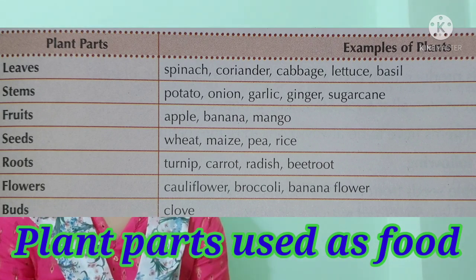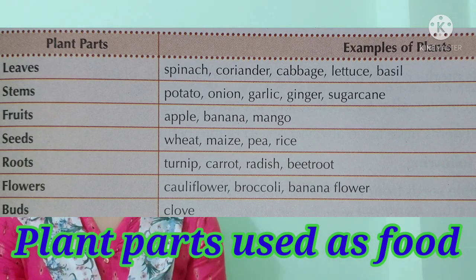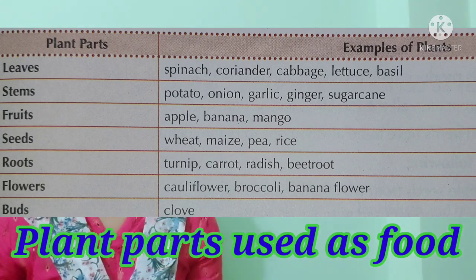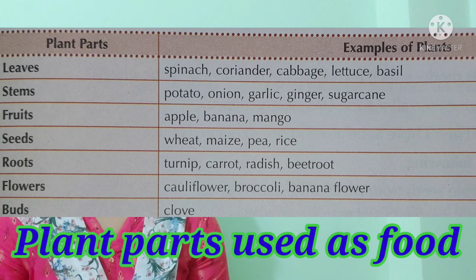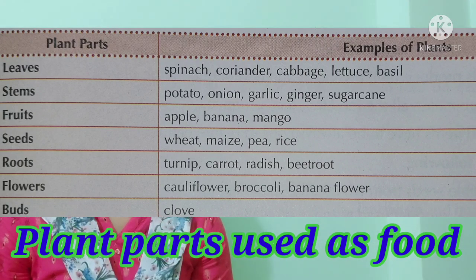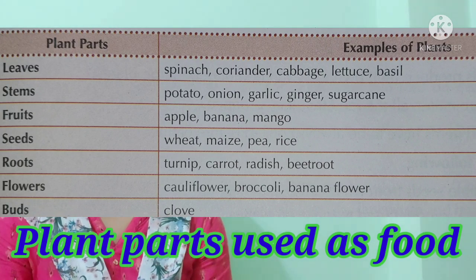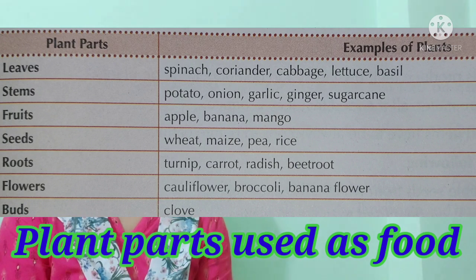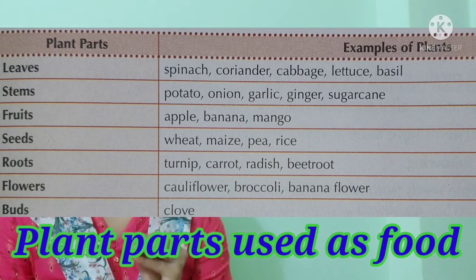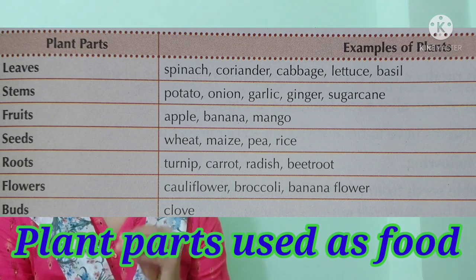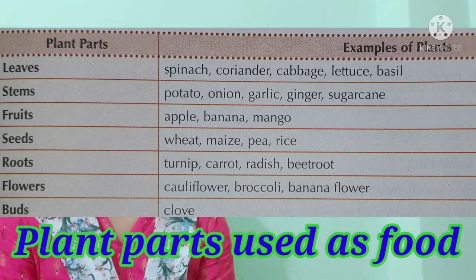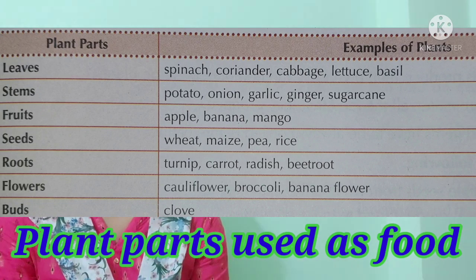We all love fruits! Examples of fruit parts where plants store food include apple, orange, mango, and banana.